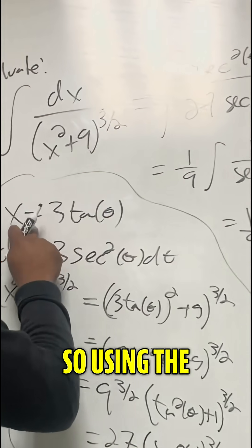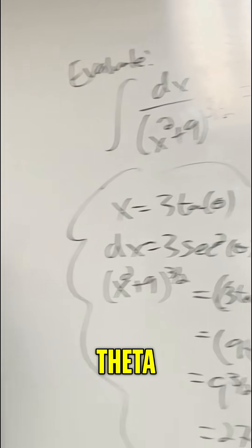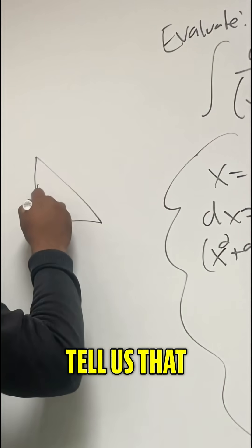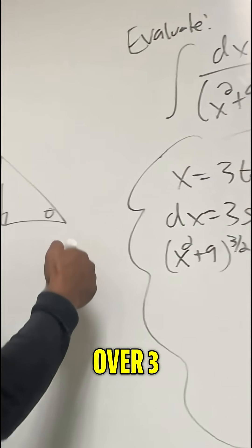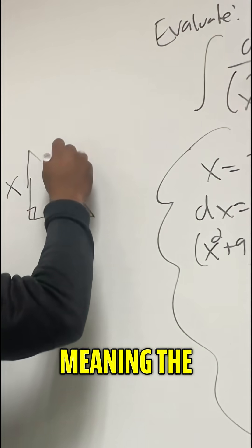And now we back substitute. So using that x equals 3 tangent of theta, then our triangle would tell us that tan of theta is x over 3. And so that would be opposite over adjacent.